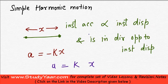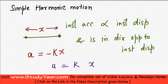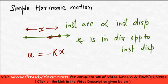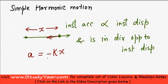Also, my instantaneous acceleration is in direction opposite to instantaneous displacement. So if my displacement is like this, my acceleration is like this. Therefore, I have a negative sign over here. Hence, the equation of a body undergoing simple harmonic motion is a equals minus kx.